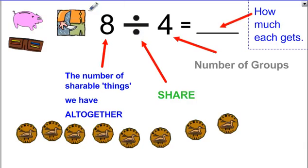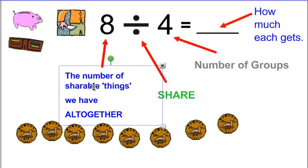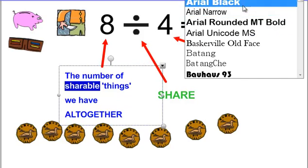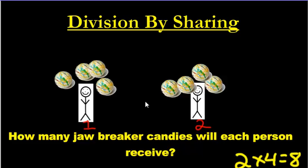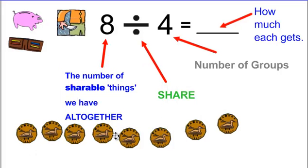Now let's look at 8 divided by 4. The first number represents how many things you have all together — and these have to be the shareable things. In my last example, the shareable things were the jawbreakers. In this example, I'm going to be sharing money, because money is something we can split up and share. The division symbol — this funny-looking line with two dots, one above and one below — means divide, which means share.